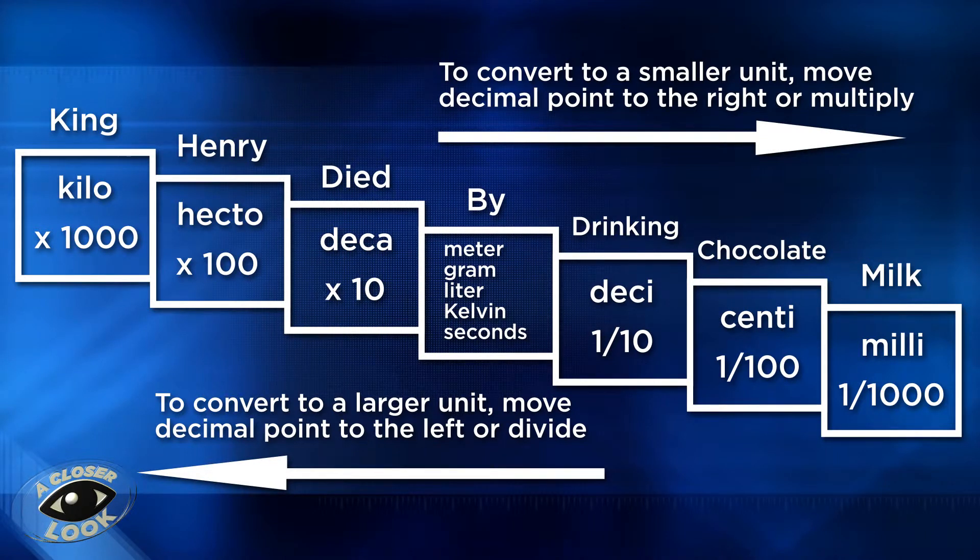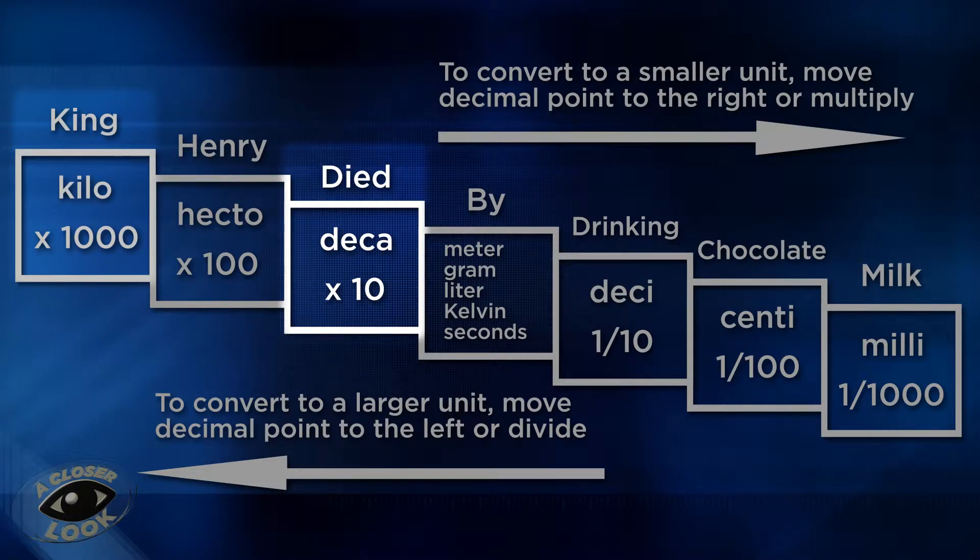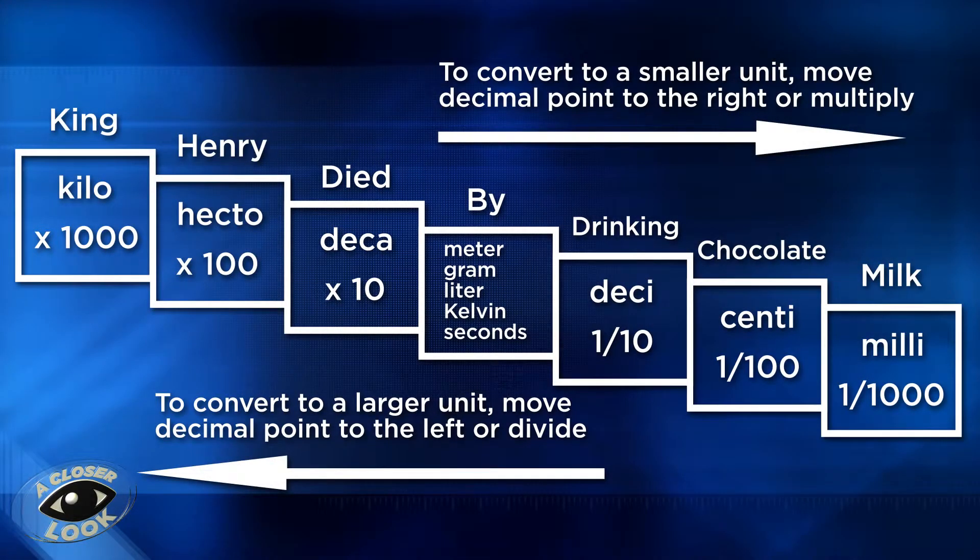When we're converting back and forth in the metric system, you can use this to determine how many places the decimal has to move. For example, if we were going from deca to kilo, we would be moving left two places according to the chart, which means the decimal would move to the left two places also.